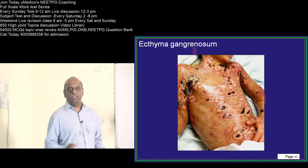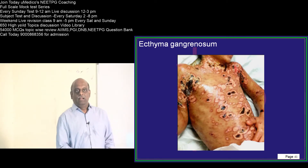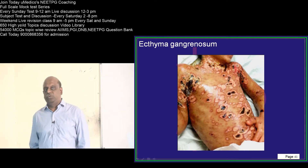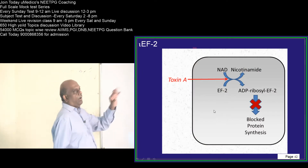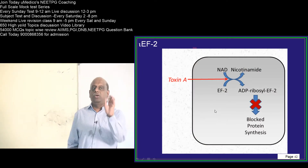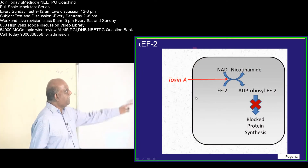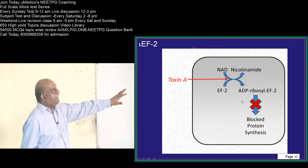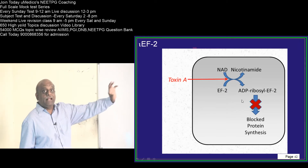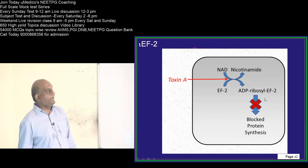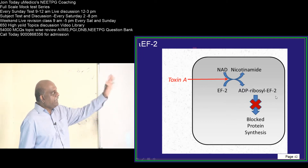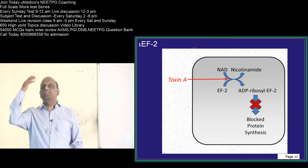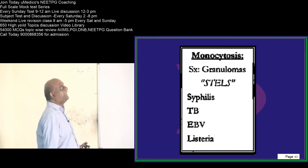Ecthyma gangrenosum — this patient had a Pseudomonas septicemia, which led to development of ecthyma gangrenosum, which you should be able to recognize. What is the mechanism of the toxin of Pseudomonas? The toxin will affect the elongation factor and lead to ADP ribosylation of elongation factor 2. When elongation factor 2 is inactivated, that leads to blocked protein synthesis — that is what you ultimately need to remember.